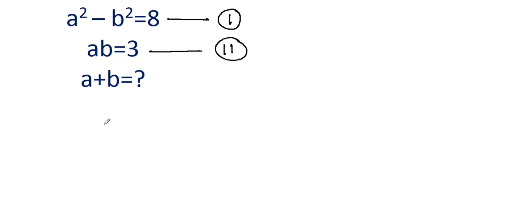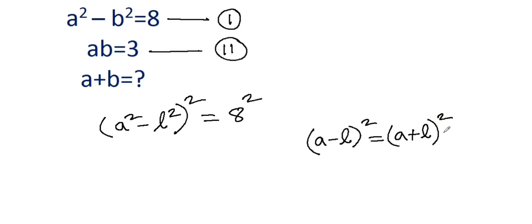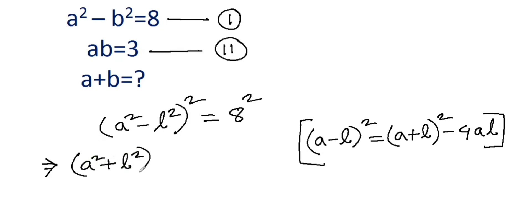...we'll get (a² - b²)² = 8², which equals 64. Now we know the formula: (a - b)² = (a + b)² - 4ab. We apply this formula here and get (a² + b²)² - 4a²b² = 64.